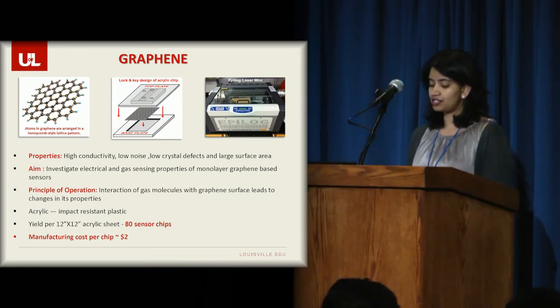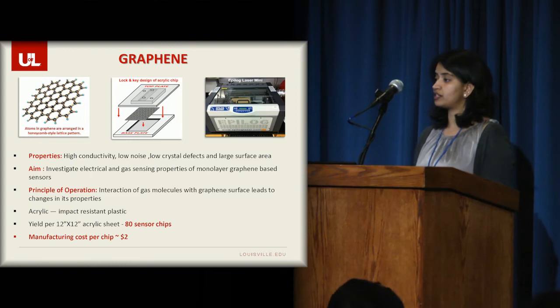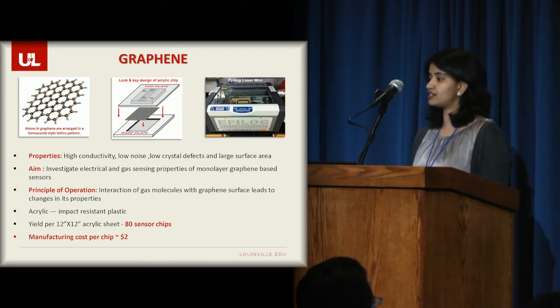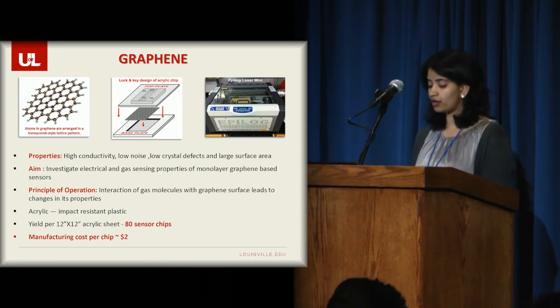So to design this device, we opted for acrylic, which is essentially impact-resistant plastic. And this brings down the manufacturing cost for the graphene device. And with each 12x12 sheet of acrylic giving about 80 sensor chips, the packaging cost for the acrylic device with the graphene as a sensing element is brought down to less than $2.